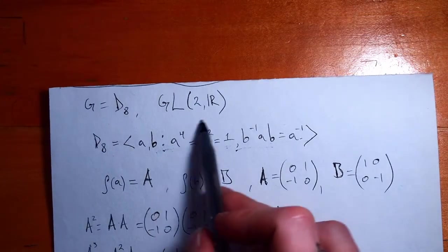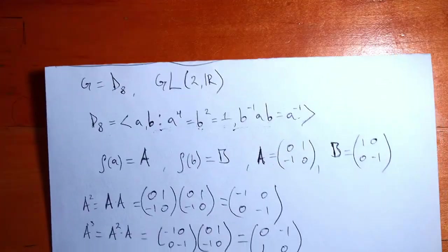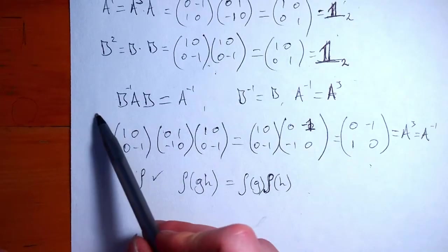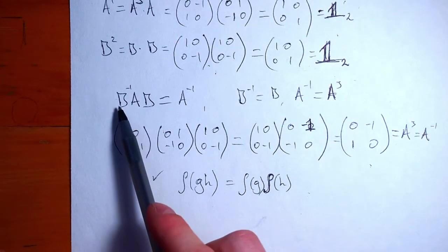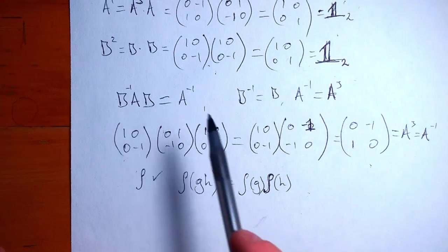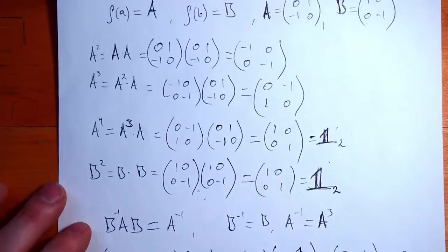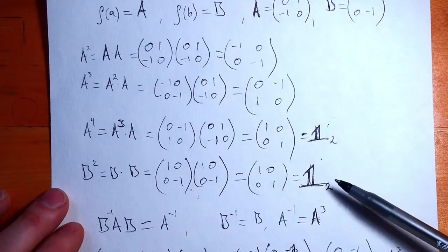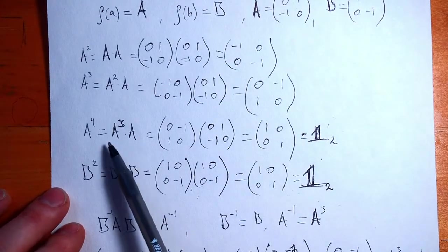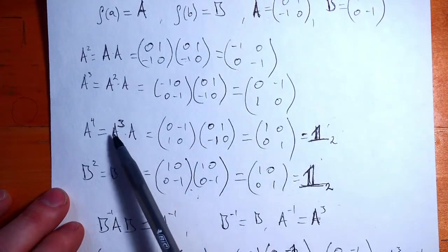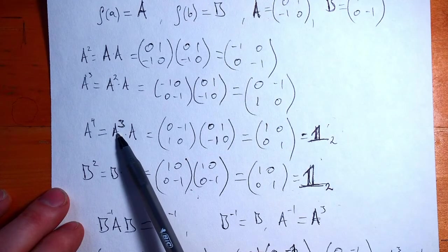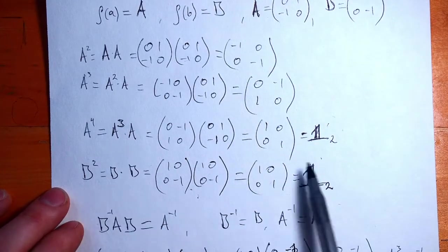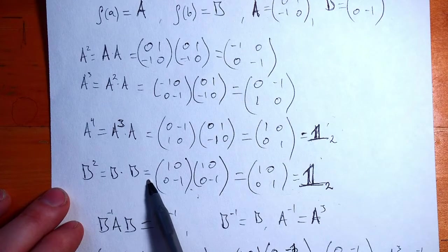So we've satisfied these two equations. We've got a good start. So now we need to check this guy, check that this holds. Thankfully, we found what A inverse and B inverse were earlier. If we look at these two equations right here, we have that A times A cubed is equal to the identity, so A cubed is also A inverse. And then here, since B squared is the identity, B is its own inverse.